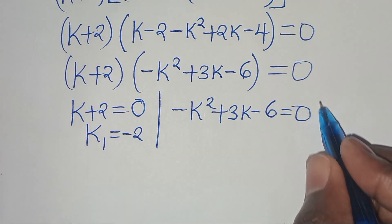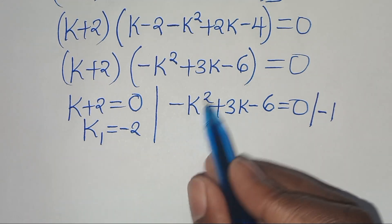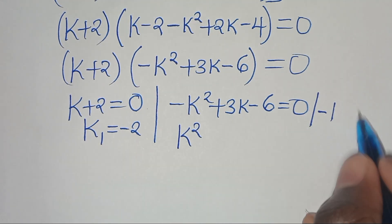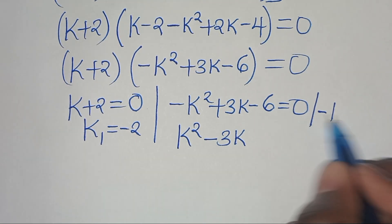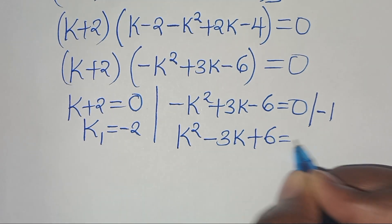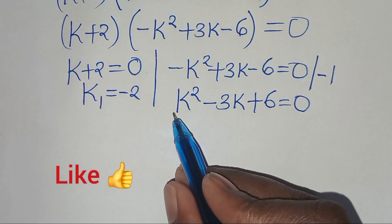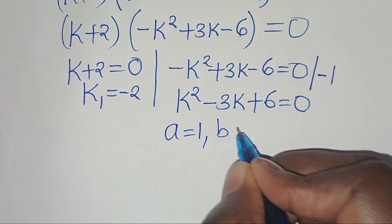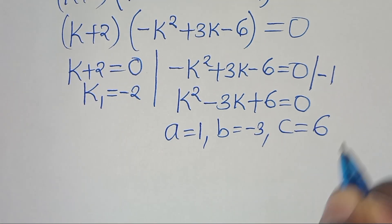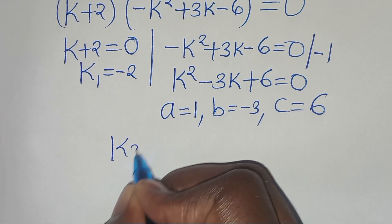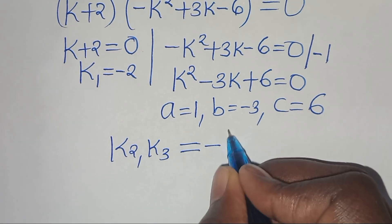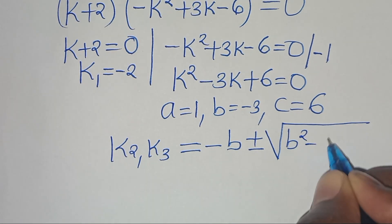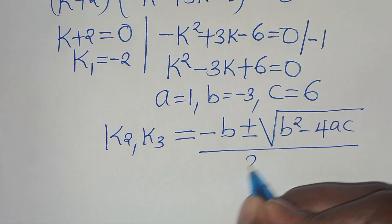For the second part, we form a quadratic equation by dividing both sides by minus 1, giving k squared minus 3k plus 6 = 0. From this quadratic, a = 1, b = minus 3, and c = 6. We solve for k₂ and k₃ using the quadratic formula: k = (−b ± √(b² − 4ac)) / 2a.